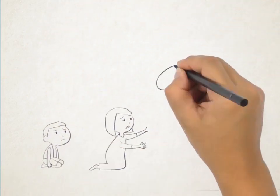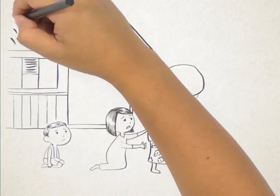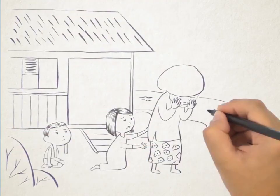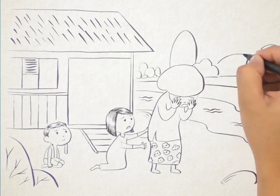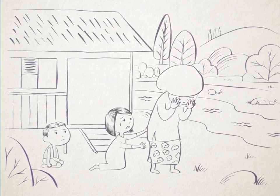Malur felt so guilty and asked for her mother's forgiveness. But it was too late. They failed to keep their promise. Their mother's heart was already broken to pieces.